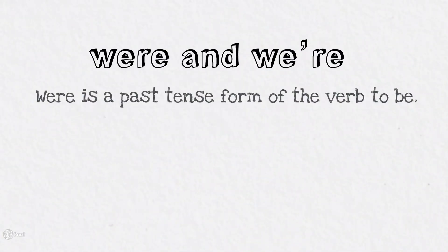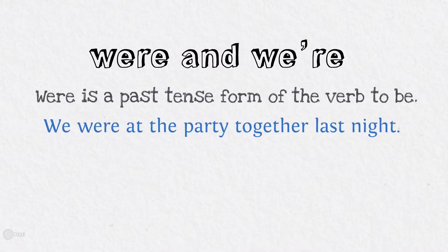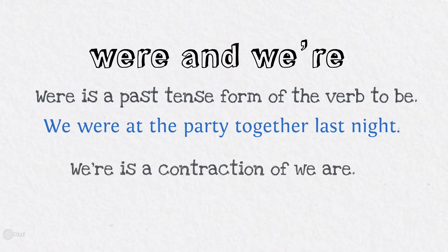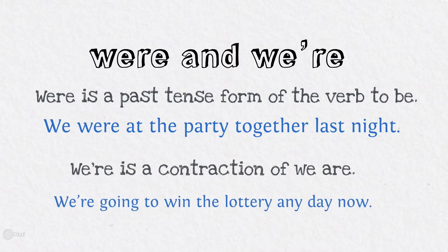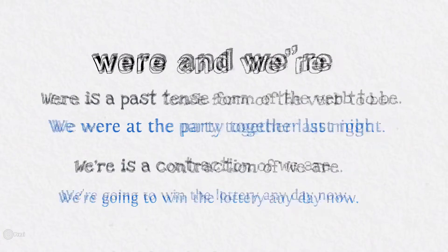Were and we're. Were is the past tense of the verb 'to be': 'We were at the party last night.' We're is a contraction of 'we are': 'We're going to win the lottery any day now.'